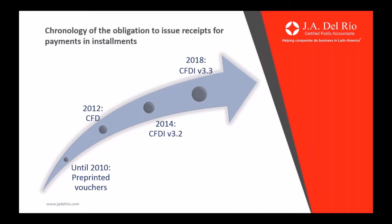However, after 2010, there was the option for taxpayers to transfer to electronic invoicing. From 2010 until 2012, there were combined versions for pre-printed forms and electronic invoicing. But starting January 1st, 2012, there was CFD — the one we were using — and as of this moment, all taxpayers were obligated to use a form of electronic invoicing.